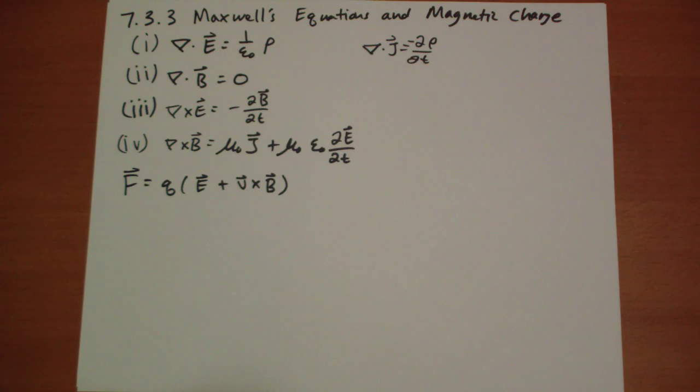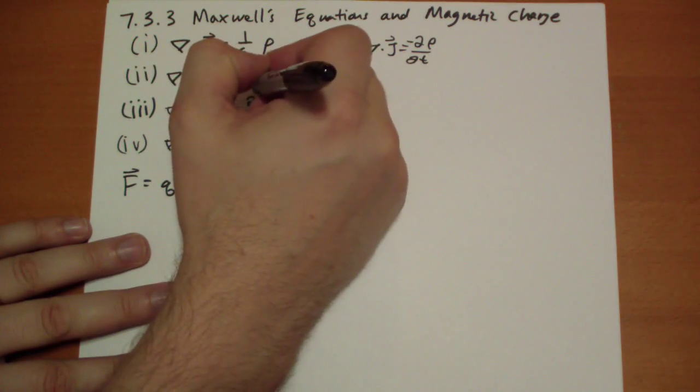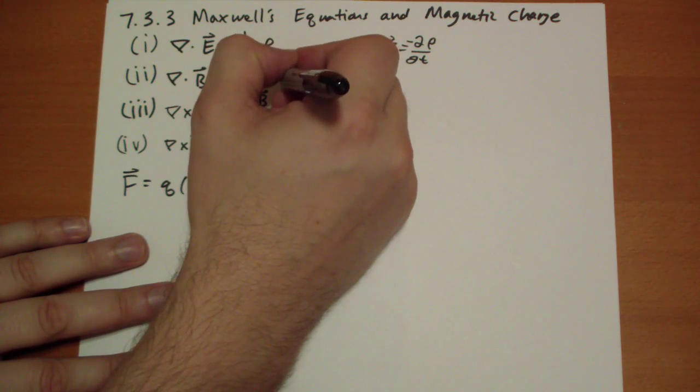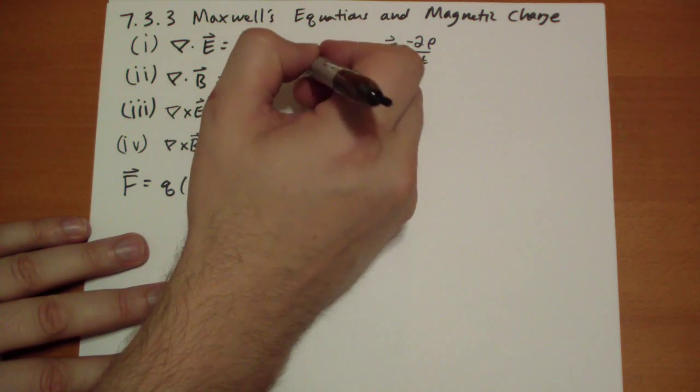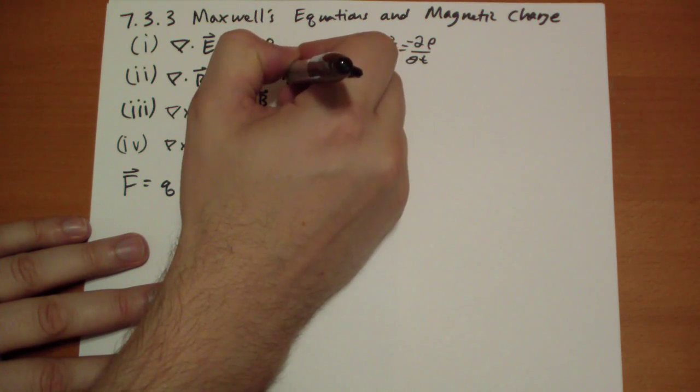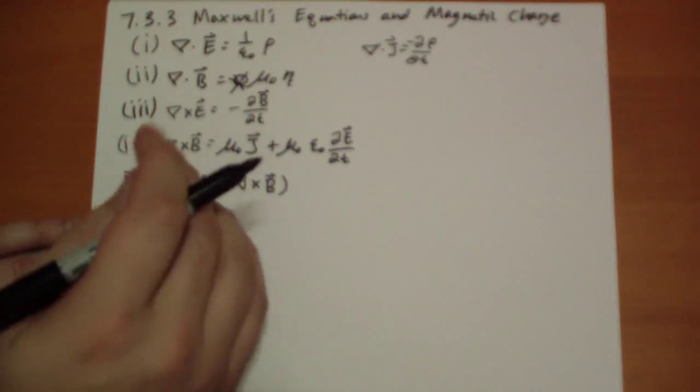Okay, what if we said that there was such a thing as magnetic charge, and the divergence of the B field was mu not eta. So that's the magnetic charge density of space, just like rho is.